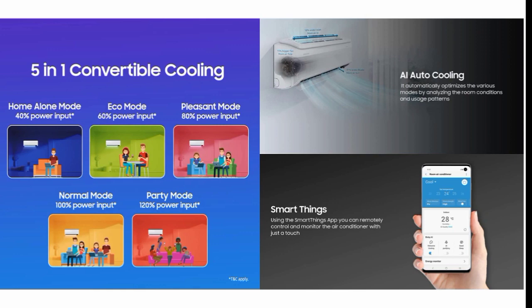The fourth option is the normal mode. When you choose this, the AC runs at 100% capacity — because you are present in the room with your phone detected.